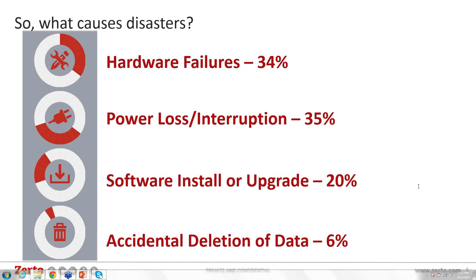Hardware failures are definitely the ones we see most often. Everyone's got hardware, and it's likely to fail at some point — usually at the most inopportune moment. Touching on what David said earlier, the change control processes that some customers have, whether they're not really following them or don't have them at all — the human error side of infrastructure management locally can sometimes cause a lot of those issues.